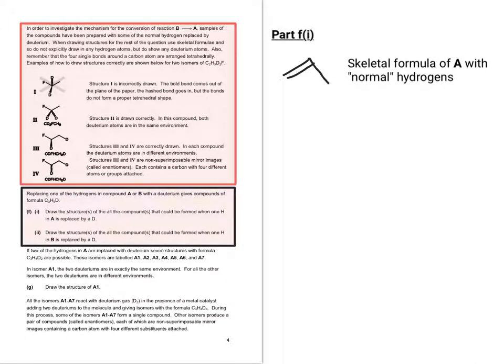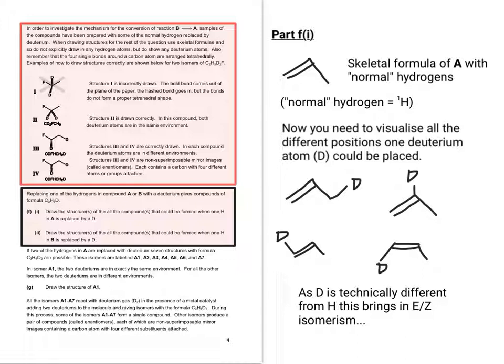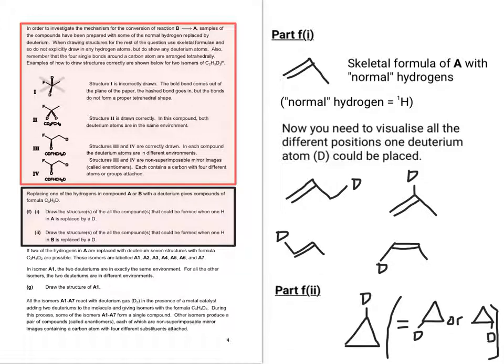So like it says in the information, when we draw a skeletal formula, we don't normally put in hydrogens. So that's what A would look like with all the hydrogens as normal hydrogens, e.g. hydrogens with one proton in the nucleus only. So what the question is asking you to do is to visualise all the different positions one deuterium atom could be placed. So don't forget that in the context of this question, D and H are different from each other. So this brings in EZ isomerism. So you've got four different possible structures. So for B, the difference here is it's a cyclic compound. So moving one D atom around doesn't create different isomers. In other words, it doesn't matter where you put the D atom, it's the same isomer.